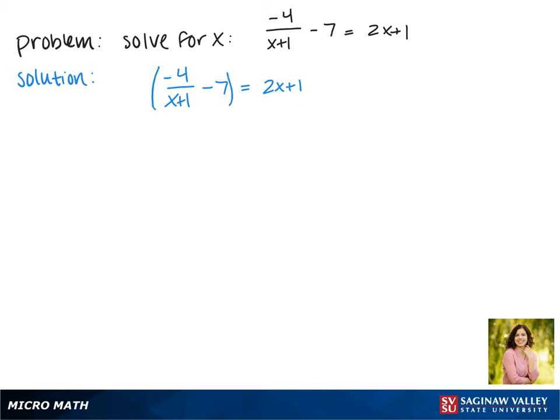There's only one denominator here, which is x plus 1, so we're going to multiply both sides by x plus 1 to make sure that cancels out.